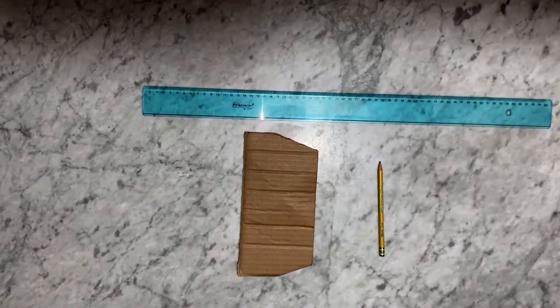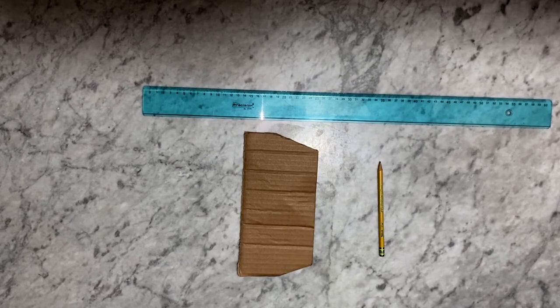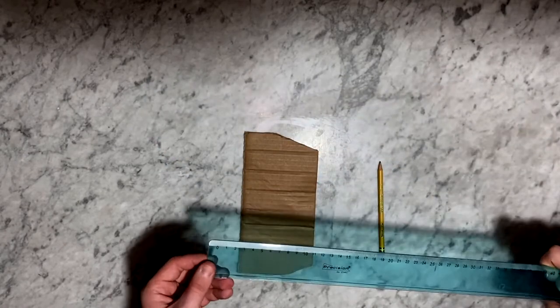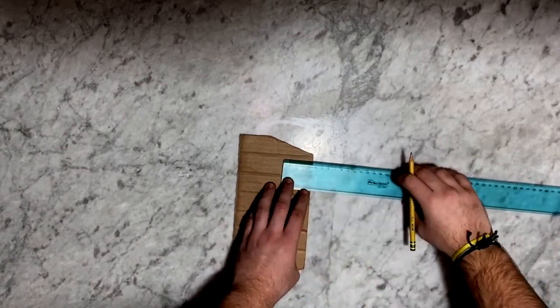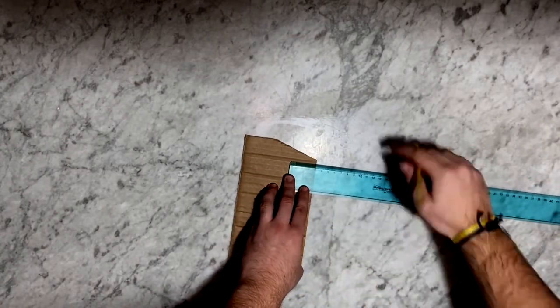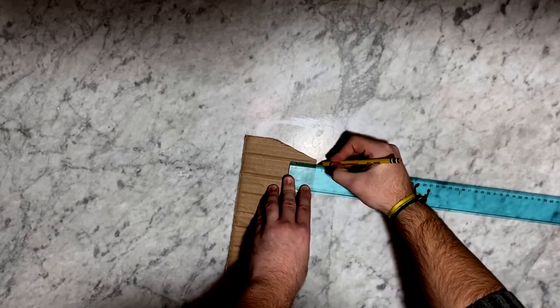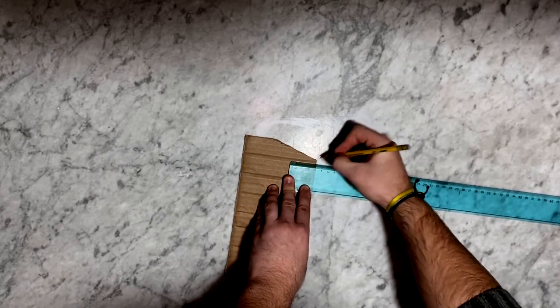The first thing to do is to draw and cut out some rectangles 3 cm wide and 15 cm tall. The number of rectangles depends on which shape we want to make: 3 for a triangle, 4 for a square, etc.